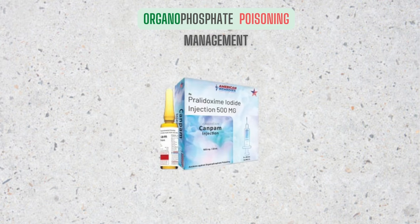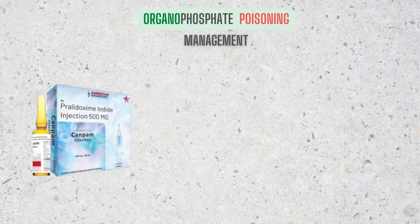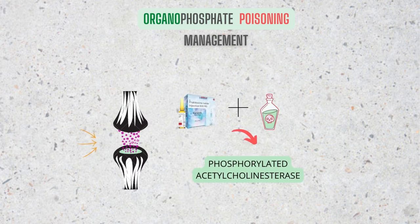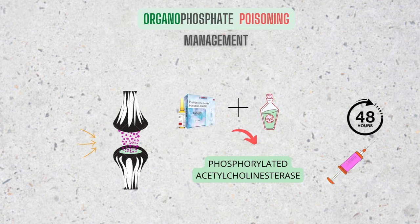The next step in the management of organophosphate poisoning is the use of PAM, or pralidoxime. PAM should be administered only after blood is withdrawn for serum acetylcholinesterase level. Pralidoxime, also called 2-PAM, should be given to affect the nicotinic receptors since atropine only works on muscarinic receptors. Pralidoxime works by reactivating the inactivated acetylcholinesterase by binding to the organophosphate. However, to work it has to be given within 48 hours of the poisoning. The agent does not depress the respiratory center and can be combined with atropine.